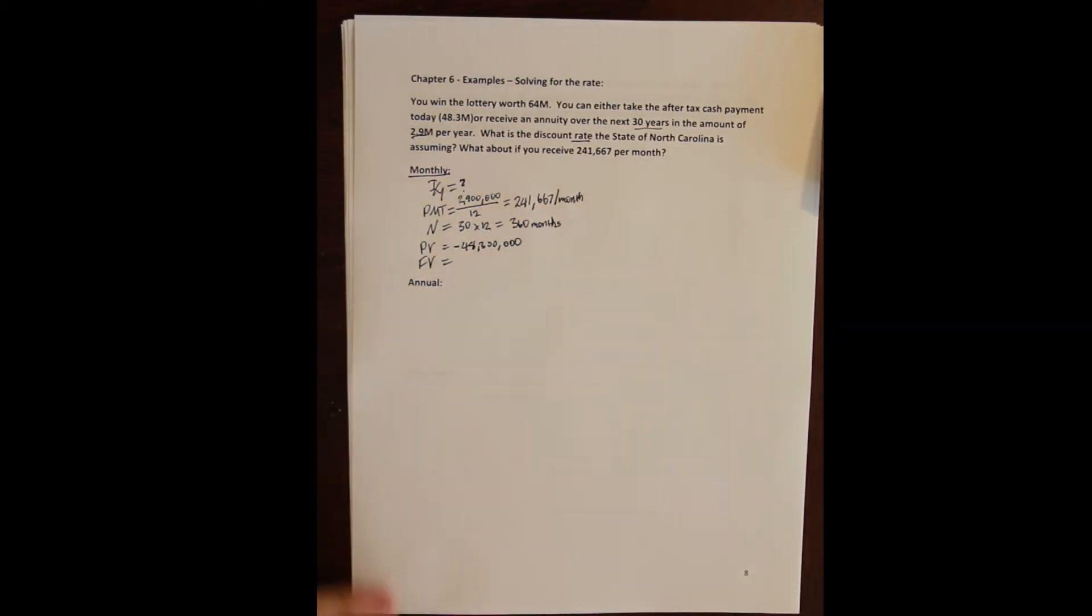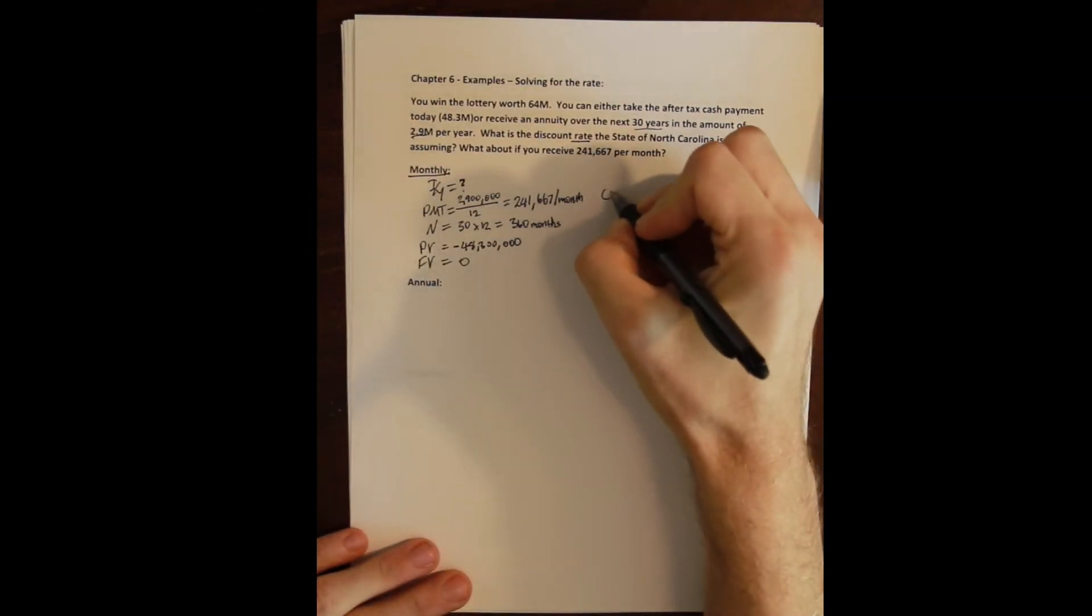So the present value here is a cash outflow of $48,300,000. Now we're not actually paying that, but we are effectively paying that. There's no future value here—again, the default is zero—but we're not getting some lump sum at the end, so there's no future value.